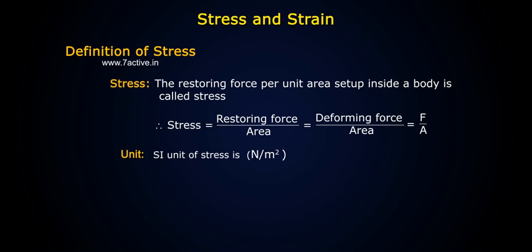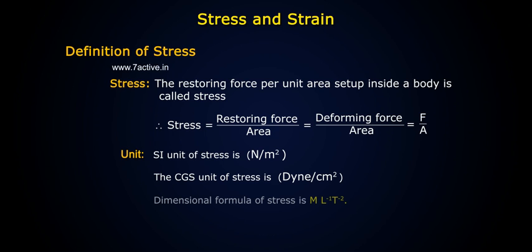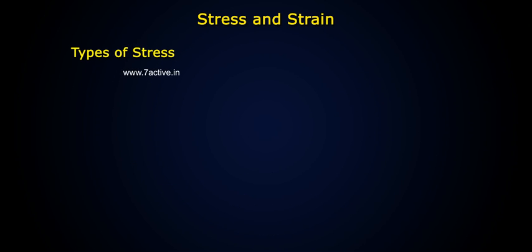Unit: The SI unit of stress is newton per meter square. And the CGS unit of stress is dyne per centimeter square. Dimensional formula of stress is ML to the power of minus 1, T to the power of minus 2.